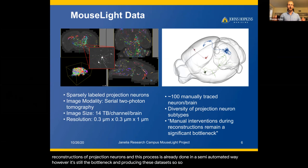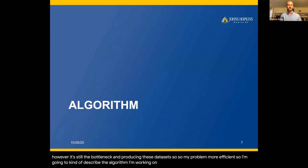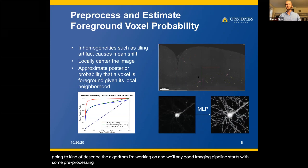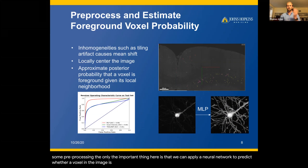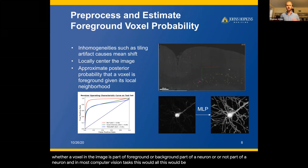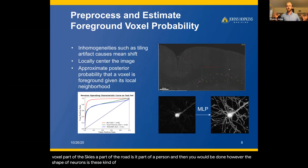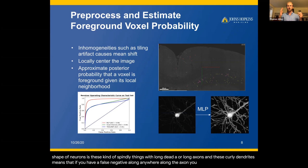I'm going to describe the algorithm I'm working on. Any good imaging pipeline starts with some preprocessing. The important thing is that we can apply a neural network to predict whether a voxel in the image is part of foreground or background — part of a neuron or not. In most computer vision tasks this would be all you need to do, but the spindly shape of neurons with long axons and curly dendrites means that a false negative anywhere along the axon could cut the neuron completely in half.